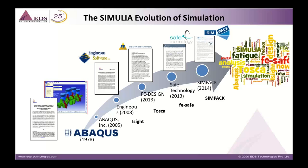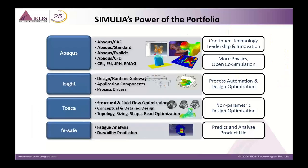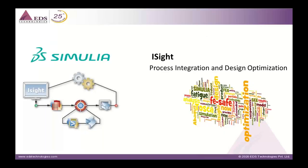Dassault Systèmes has acquired different companies with amazing technologies and talented people. For example, we have iSight, which is our main topic for today, along with Tosca and fe-safe, which come under the Simulia brand. The portfolio covers four softwares: Abaqus, a nonlinear analysis software; iSight, a design optimization and process integration software; Tosca, for non-parametric weight optimization; and fe-safe, for fatigue life estimation.